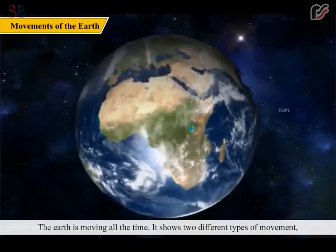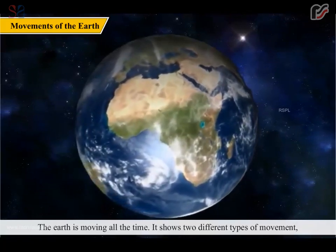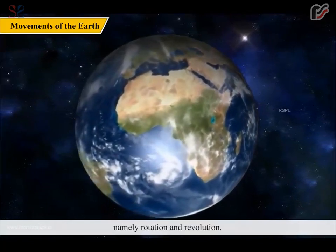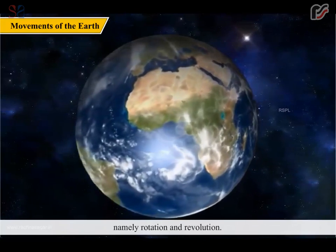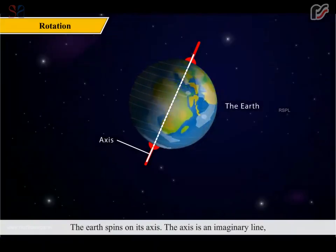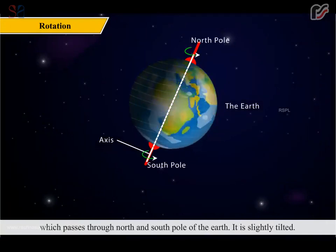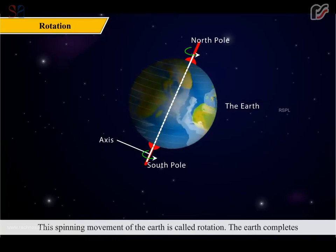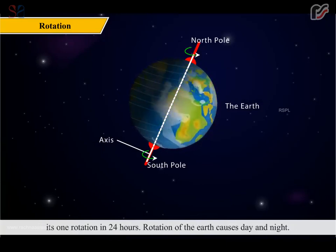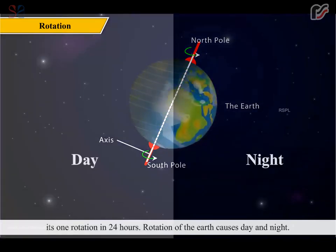The Earth is moving all the time. It shows two different types of movement, namely, rotation and revolution. The Earth spins on its axis. The axis is an imaginary line which passes through the north and south pole of the Earth. It is slightly tilted. This spinning movement of the Earth is called rotation. The Earth completes its one rotation in 24 hours. Rotation of the Earth causes day and night.